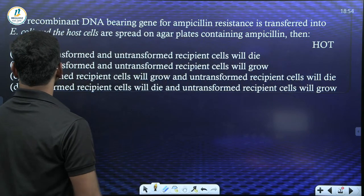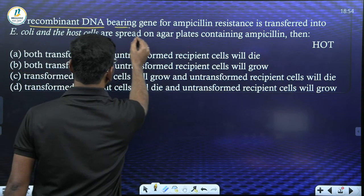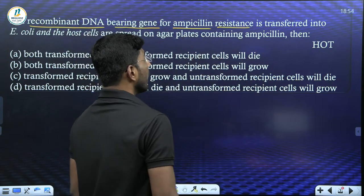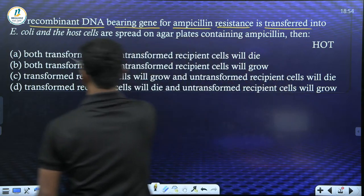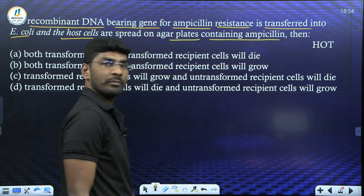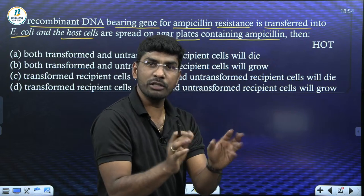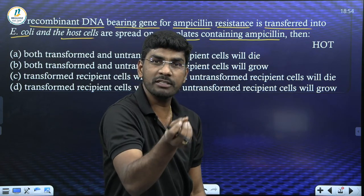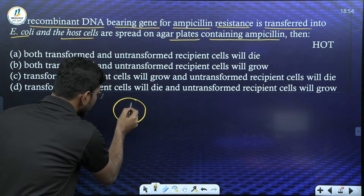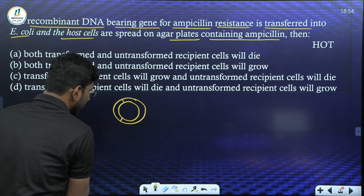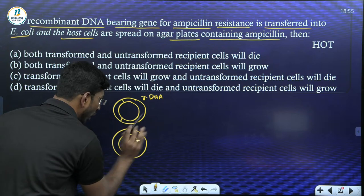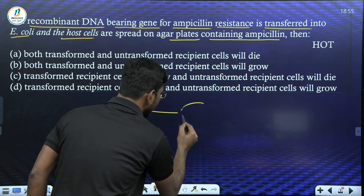Question one: If a recombinant DNA bearing a gene for ampicillin resistance is transferred into E. coli and the host cells are spread on an agarose plate containing ampicillin — in rDNA technology, selectable markers are present: ampicillin-resistant gene, tetracycline-resistant gene, lacZ gene. Here, one vector has an ampicillin-resistant gene (this is the rDNA), and another vector has no ampicillin-resistant gene.